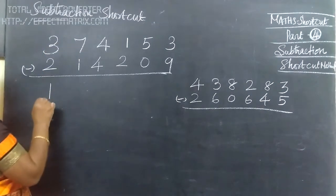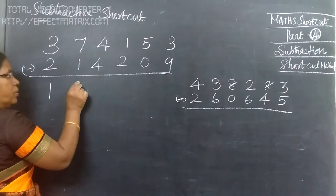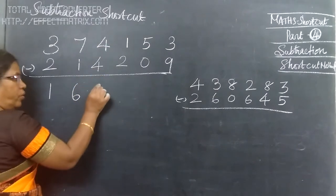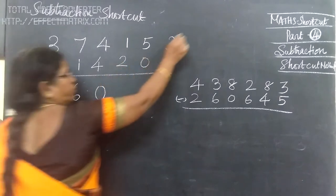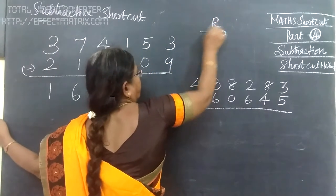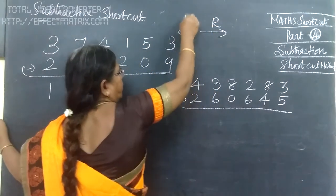Now, 3 minus 2 is 1, then 7 minus 1 is 6, 4 minus 4 is 0. But 0 is the same. This will be right side, this will be left side.